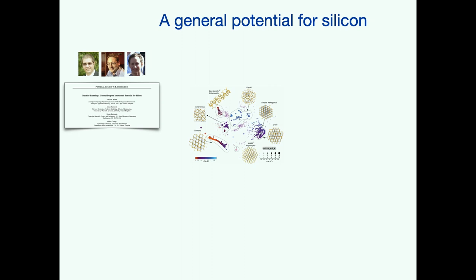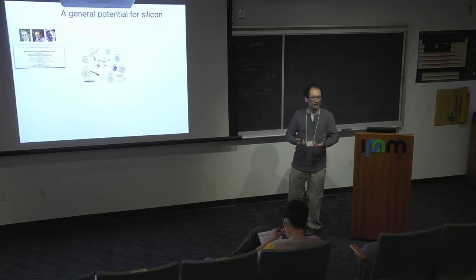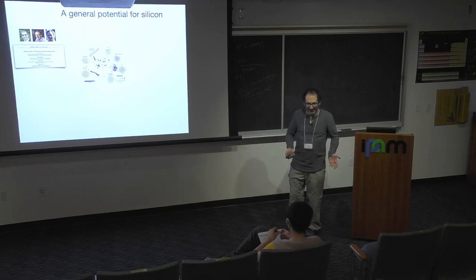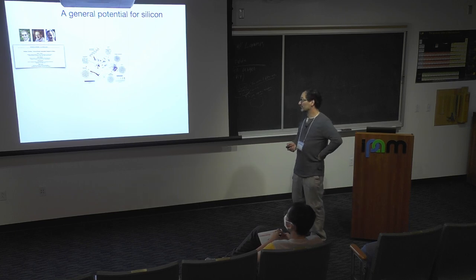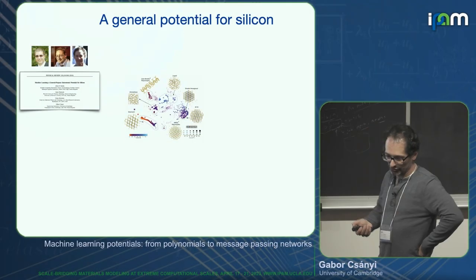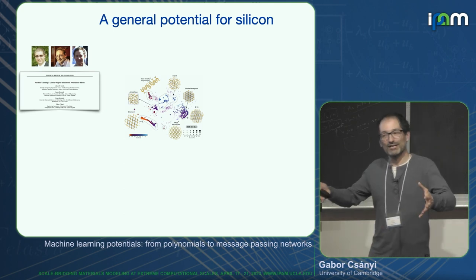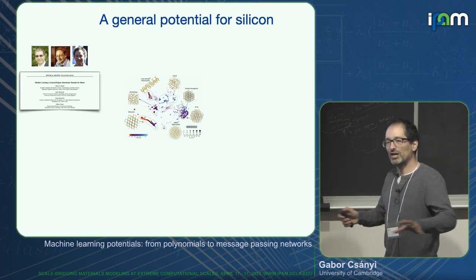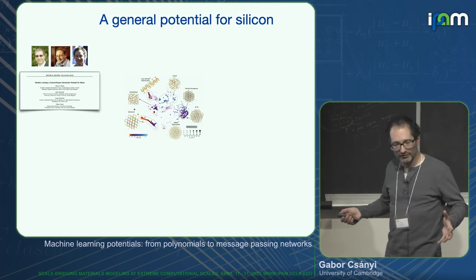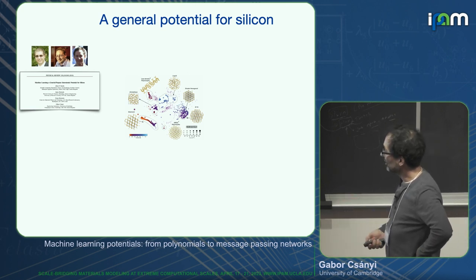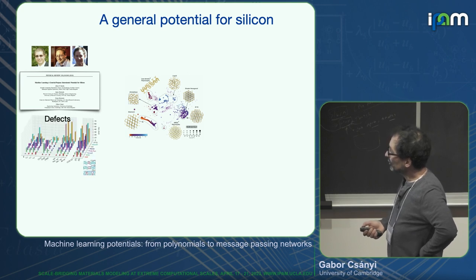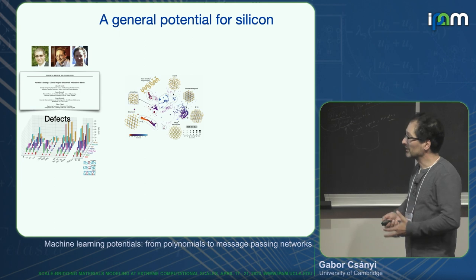In the early 2010s when I was talking about these things, colleagues would nod and smile and say, 'At least someone is trying, but it's not going to work — the space is too big.' It took about 10 years to really believe it. A big part was James Kermode's work trying to make a potential for silicon — the test case of lots of materials modeling approaches — which works in general for a very wide range of temperatures and pressures and all the different structures silicon can make.